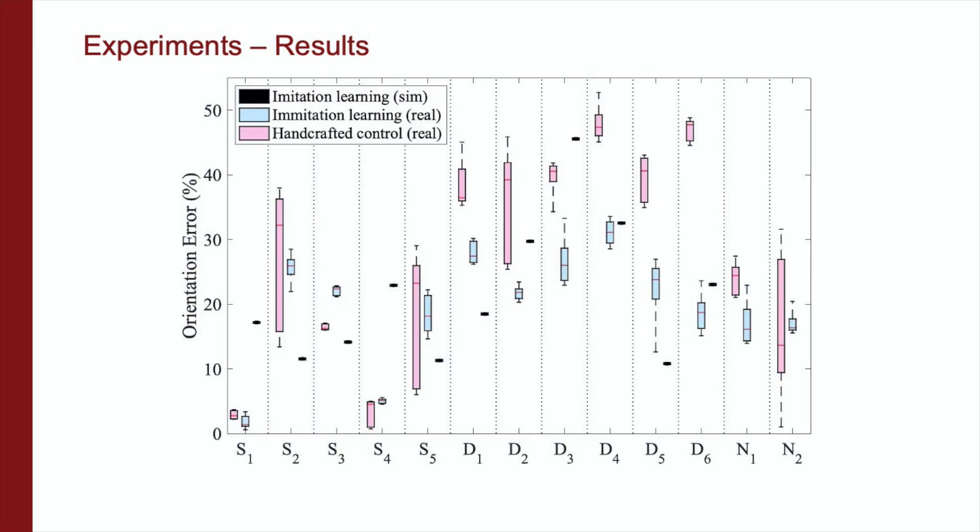A summary of the results is shown in this figure, where S stands for simple cases, D stands for difficult cases, and N stands for novel cases. The imitation learning method performed better for three out of the five simple transformation cases. The average orientation error across these five trials shows that the imitation learning method and the handcrafted control are comparable when performing object rotations about vertical axis. However, the handcrafted control policy has more than three times the standard deviation of the imitation learning.